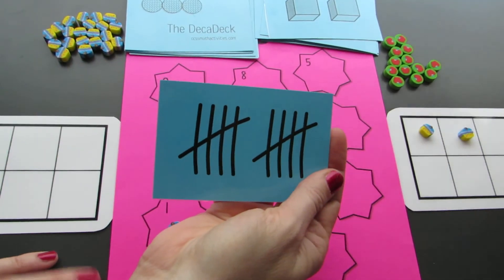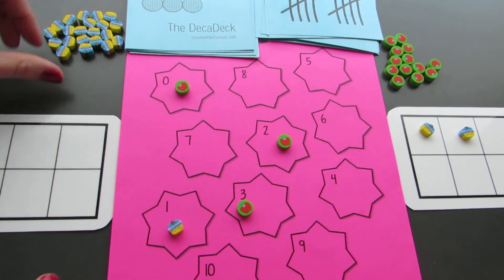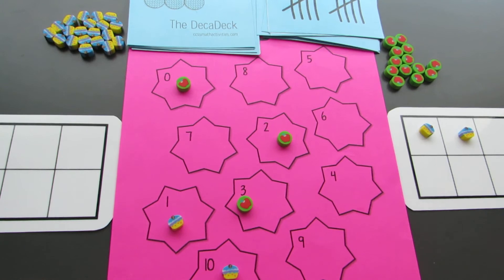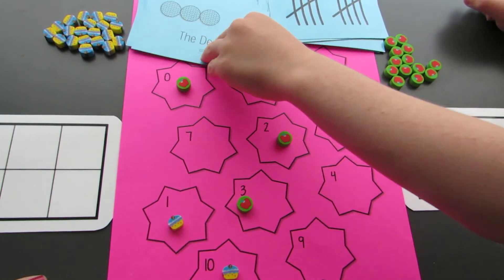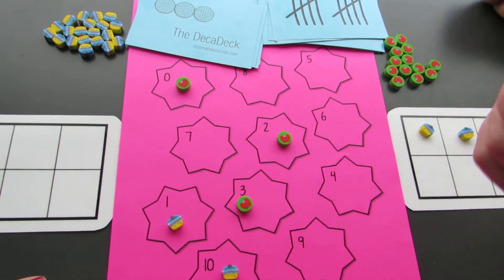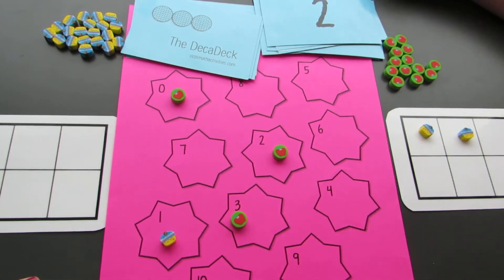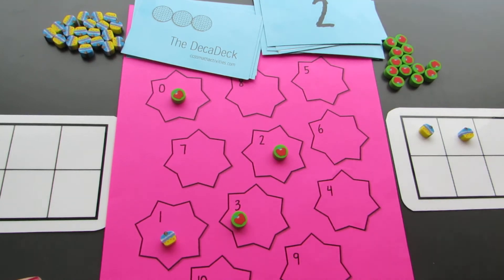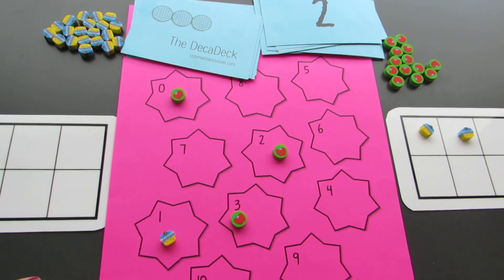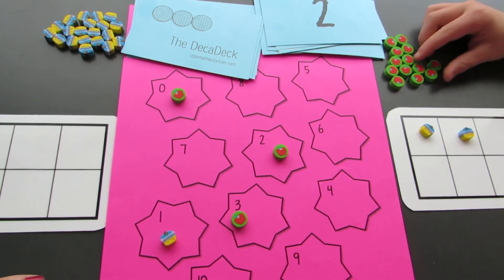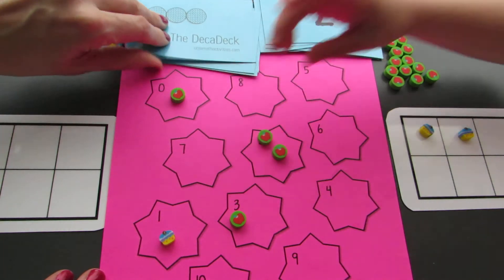I got ten. Five and five is ten. Okay. Go ahead. Two. Two. I got a two. Oh, that means you have two apples on a two.